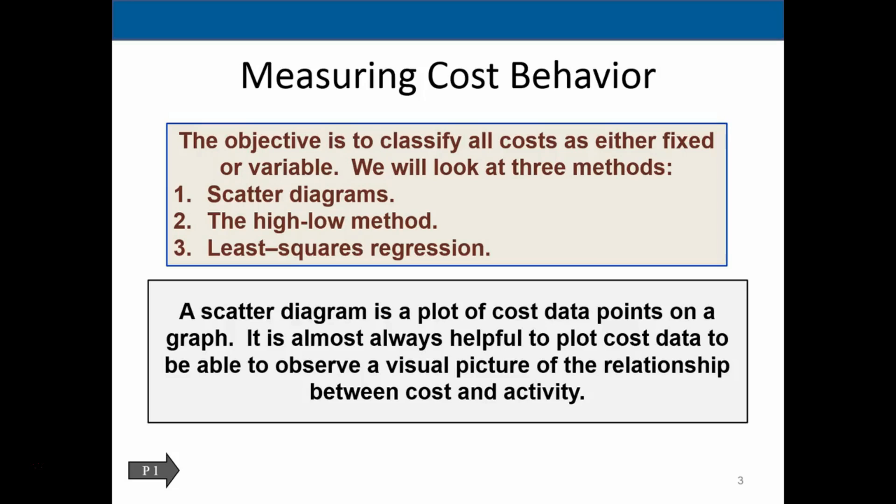One, we can use a scatter diagram. Two, we can use a high-low method. And three, we can use least squares regression. So these are mathematical ways to try to figure out the slope of the cost line so that we can approximate these slopes and thereby make judgments and relevant decisions into the future.